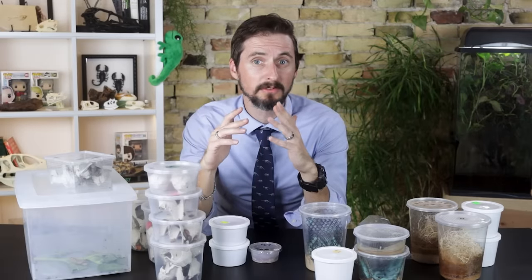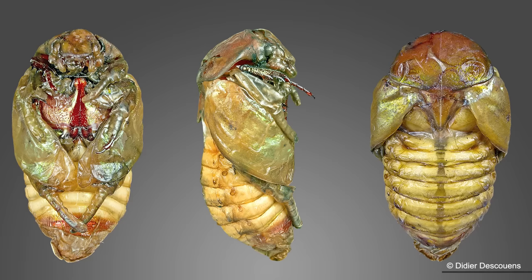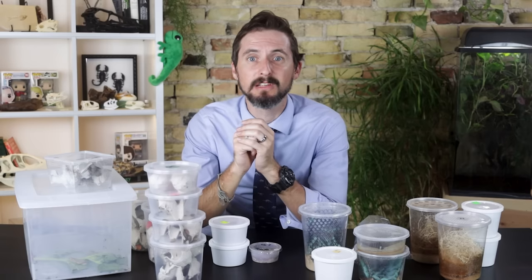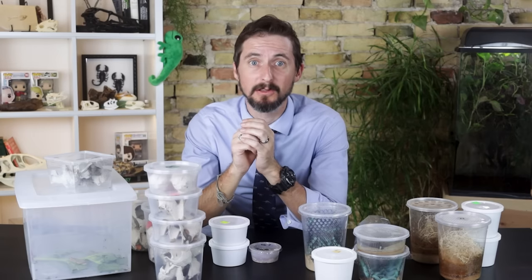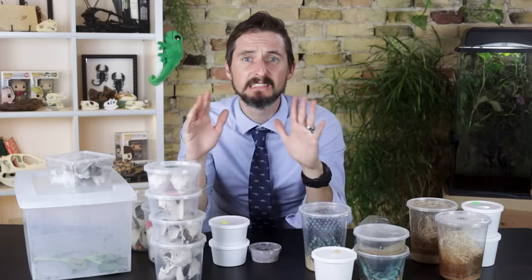Holometabolous larvae generally molt into larger and larger worms until they molt not into an adult just yet, but into a pupa. These pupae are non-feeding and generally non-ambulatory — they just hang out until they're ready to molt into a generally winged adult that looks almost nothing like the larval form. This is complete metamorphosis.